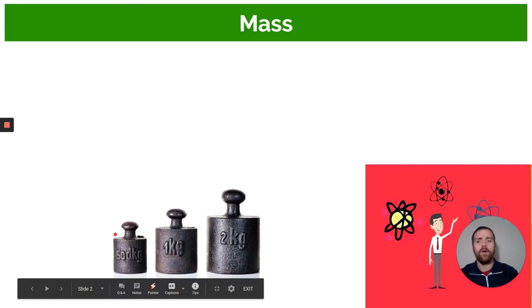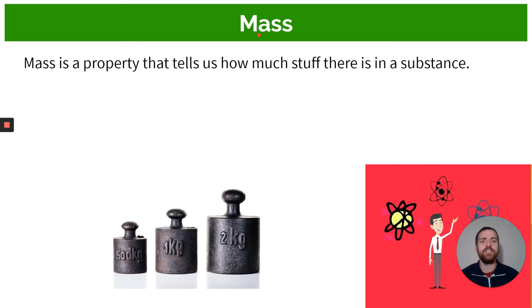First off we need to talk about this term mass. Mass is a property that tells us how much stuff there is in a substance. Let's first talk about this word property. So that's just a characteristic. It describes objects, it describes stuff.